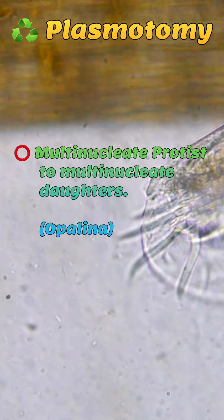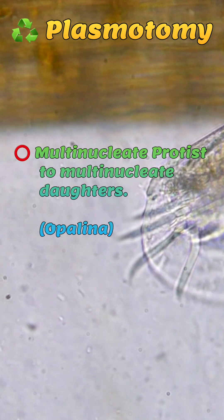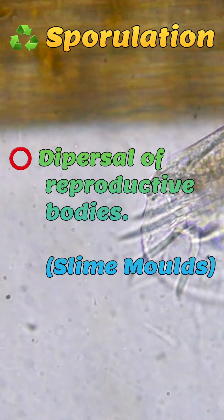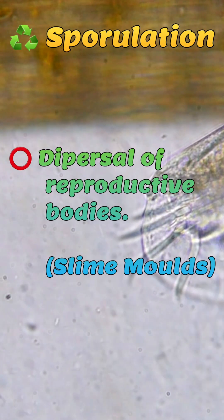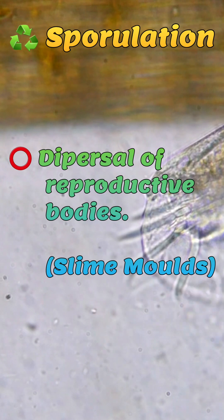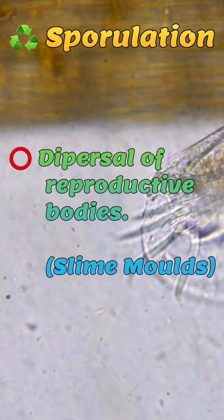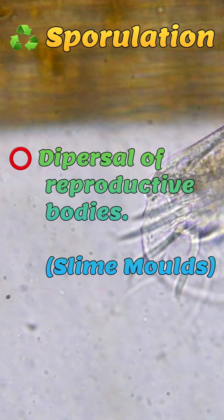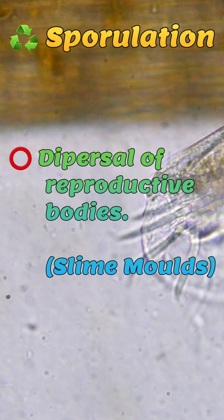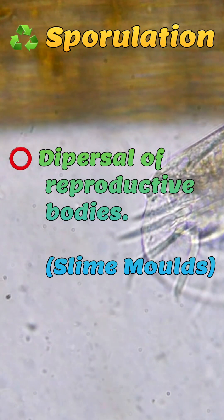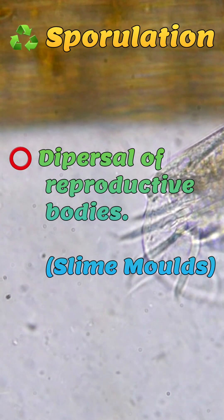In plasmotomy, the multi-nucleate protist divides into two or more multi-nucleate daughters. In sporulation, as the name suggests, formation of reproductive bodies for dispersal occurs, as seen in slime molds.